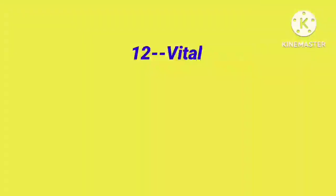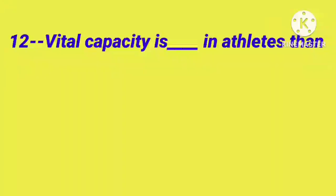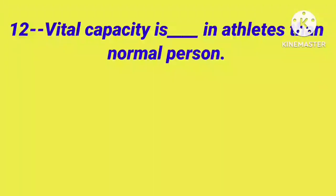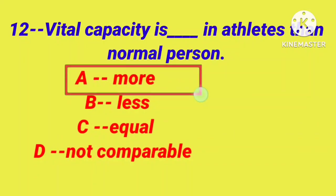Question number 12: Vital capacity is ___ in athletes than normal person. Option A: more, Option B: less, Option C: equal, Option D: not comparable. Correct answer is option A, because athletes need more energy.